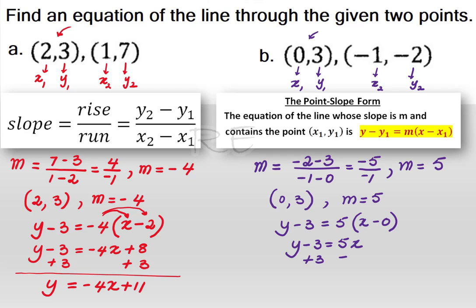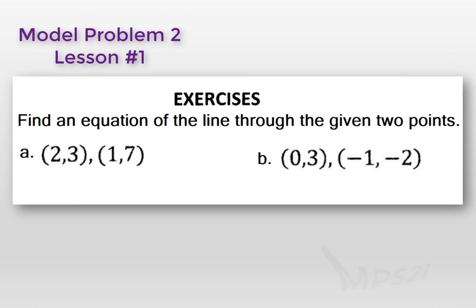Y minus 3 is equal to 5x. We add 3 to both sides, and we get the equation y is equal to mx plus b, which is y is equal to 5x plus 3.